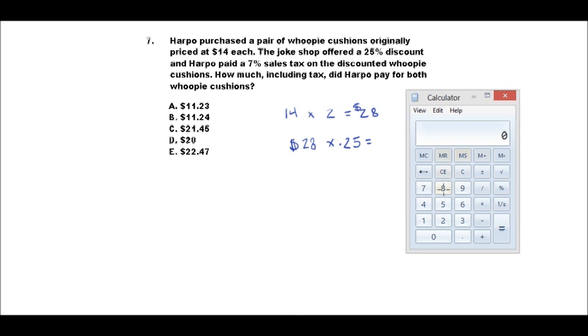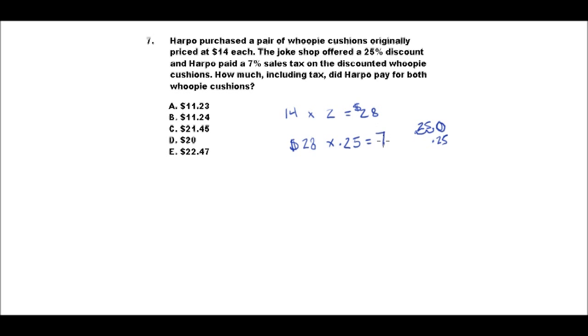And that equals, let's see what that is. We'll just take the calculator and multiply that out, times .25. 28 times .25, and that equals 7. So that's an easy number to work with, and that's 7.